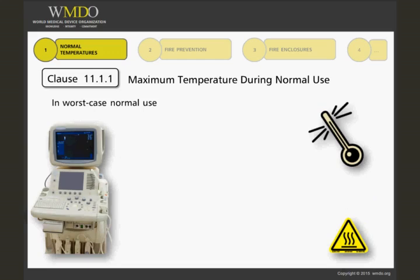When running the temperature test on medical electrical equipment, it is operated in the worst-case normal use, including the maximum ambient operating temperatures, which are specified in the user manual. It can also be run at normal laboratory ambient, and the resulting temperatures are corrected for the specified maximum ambient. The equipment parts shall not reach temperatures exceeding the values given in Table 22 and Table 23 on the next slide.